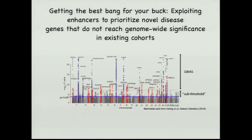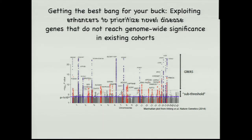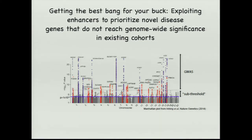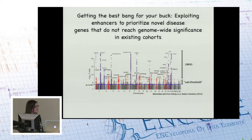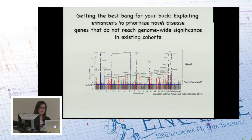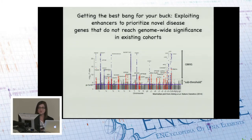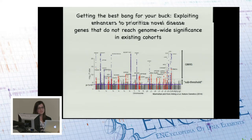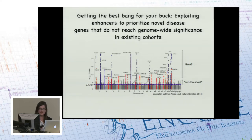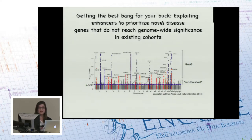One of the biggest complaints about GWAS studies is that the significance threshold is set so high due to multiple hypothesis testing that a lot is missed. One way to get the best bang for your buck might be to exploit functional elements to prioritize novel disease genes that don't reach genome-wide significance. You can take what you've learned from enhancers overlapping GWAS loci and ask whether sub-threshold loci share the same characteristics. That looks like a relatively good approach, and it allows us to get more information from existing cohorts — though of course that needs validation.